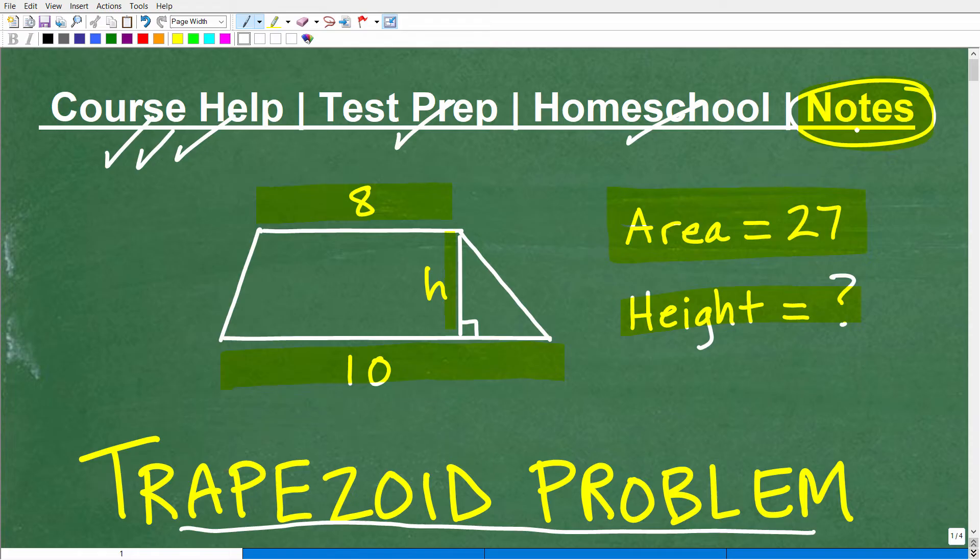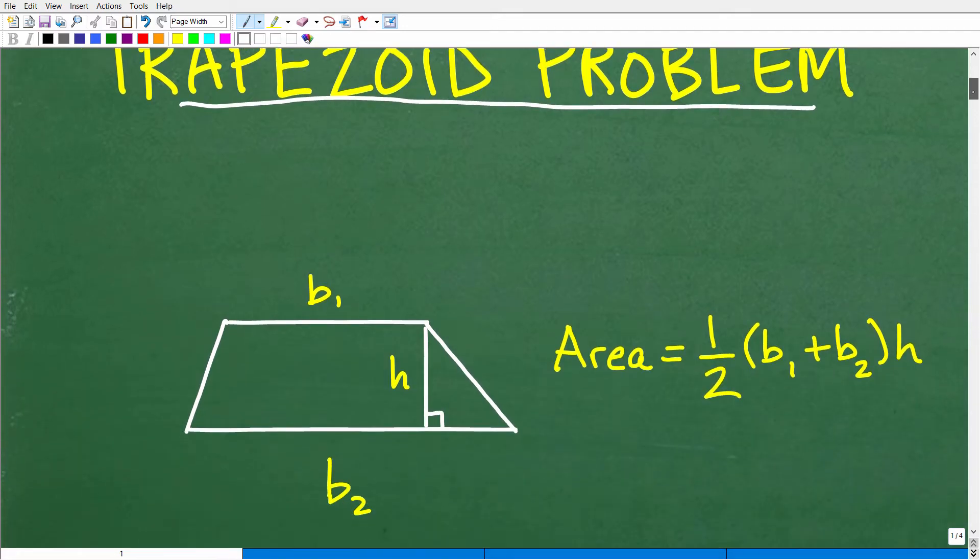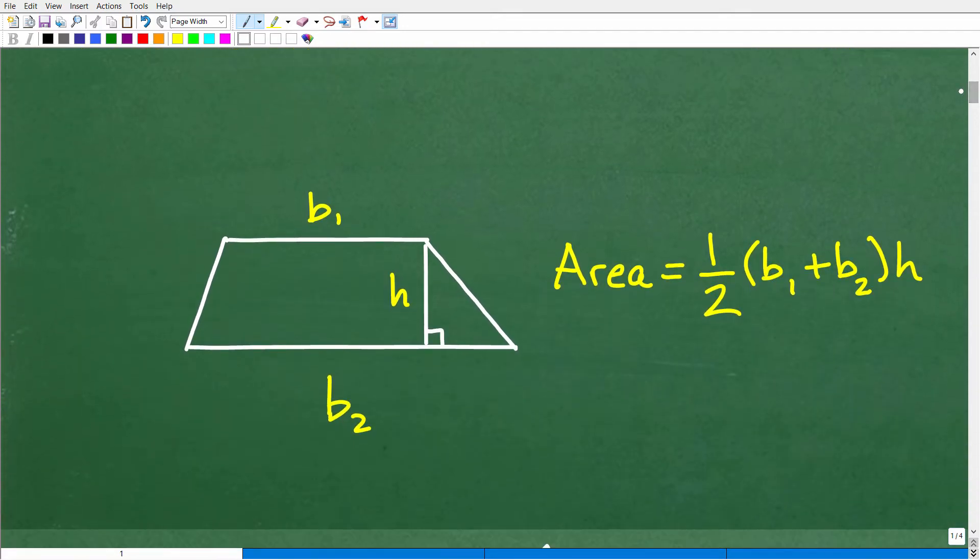Okay, so here is the setup. So we have the area of this trapezoid is 27. This side is 8. This side is 10. What is the height? Again, we're going to need to know the formula for the area of a trapezoid and some basic algebra. So let me go ahead and show you right here the formula for the area of a trapezoid. So typically, you'll see it written this way. There's a couple of different ways stylistically you can write the formula for the area of a trapezoid.